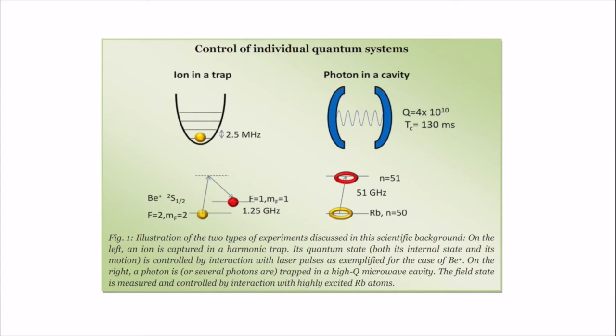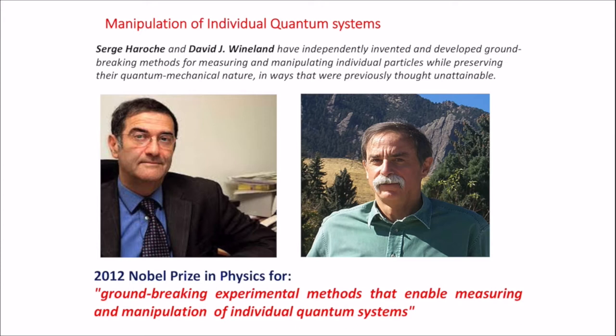Since the 1980s, due to enormous progress in technology and thanks to persistent research by some groups, it became possible to trap single ions or even trap photons in a cavity, which led to the control of individual quantum systems. Two research groups — one led by Serge Haroche and the other by David J. Wineland — contributed hugely towards the manipulation of individual quantum systems. Their work revolutionized the technological application aspects of quantum physics, and very deservingly, they were awarded the 2012 Physics Nobel Prize.